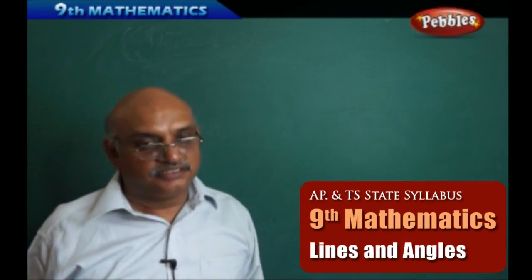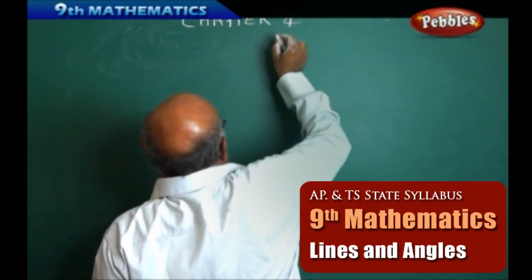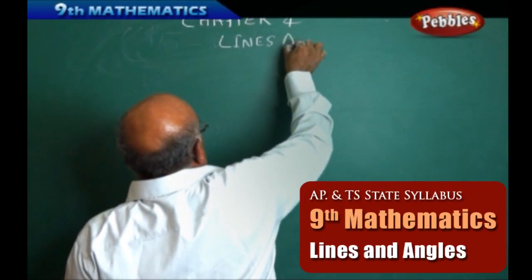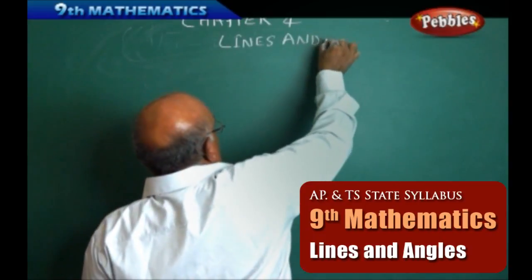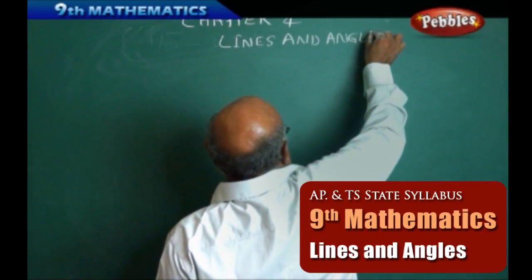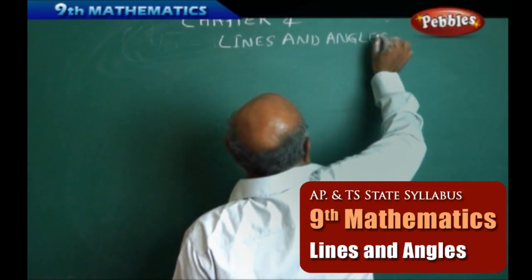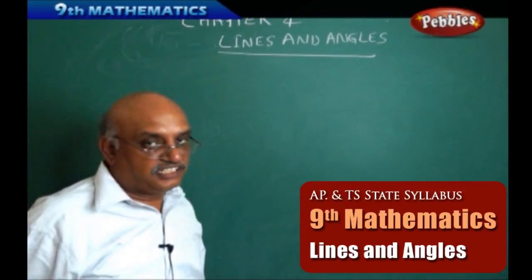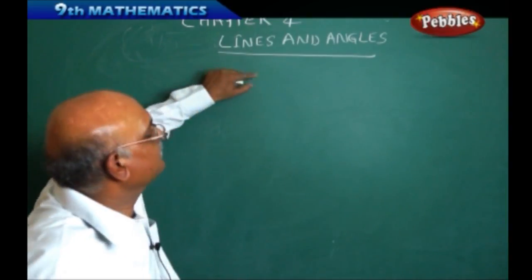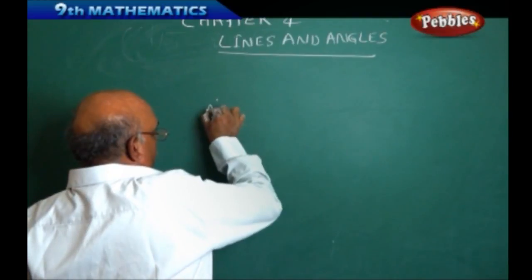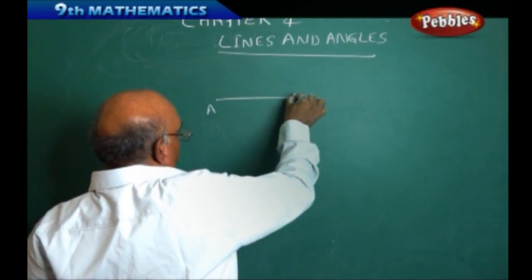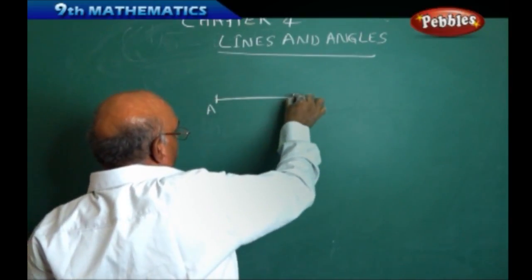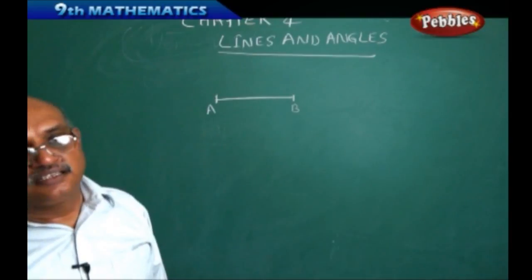Now the next chapter, this is chapter 4: Lines and Angles. What do you mean by a line? If you take any two points in space, let us call them A and B — this is one point, this is another point. The portion I have drawn here from A to B, we are calling it as a line.